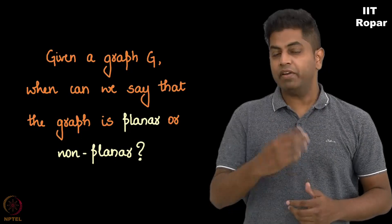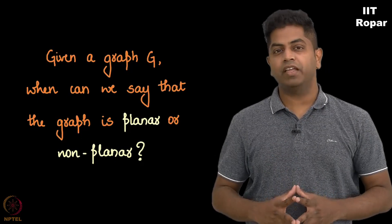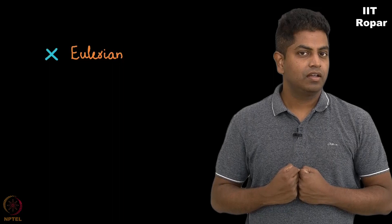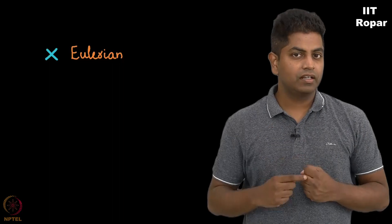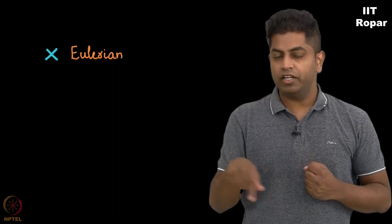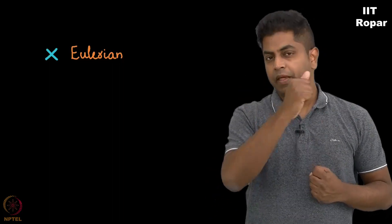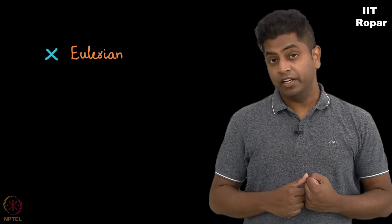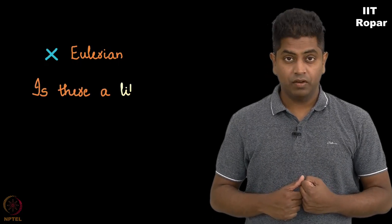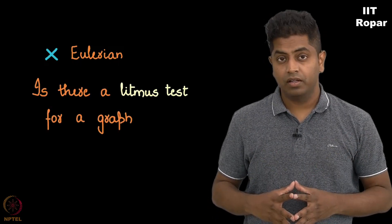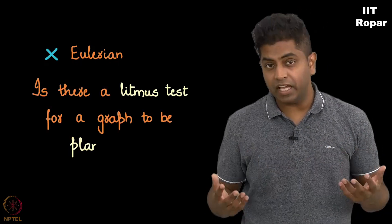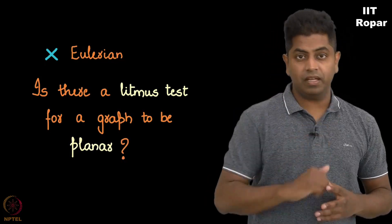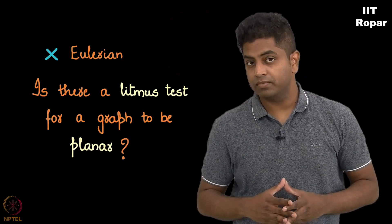Remember, given a graph I could say whether it's Eulerian or not — that was very easy. Just to recollect: all vertices should be of even degree, then it will be Eulerian. Is there such a litmus test for a graph to be planar? How easily can we say that yes, this is planar, or no, this is not planar?